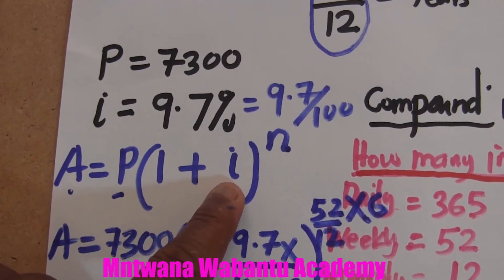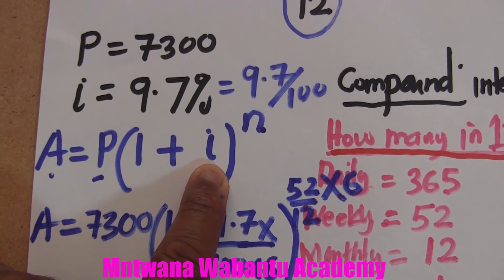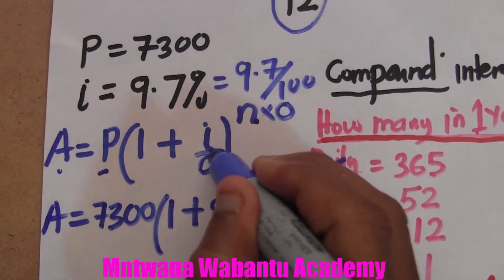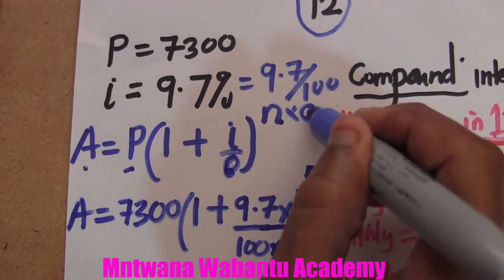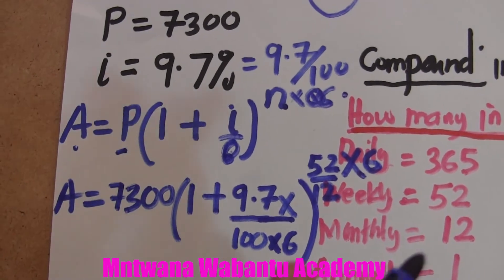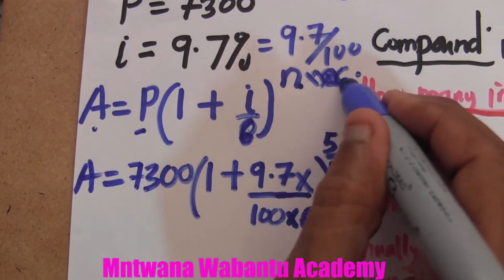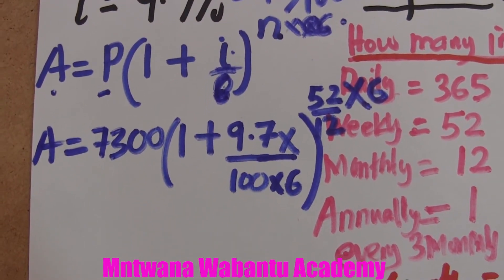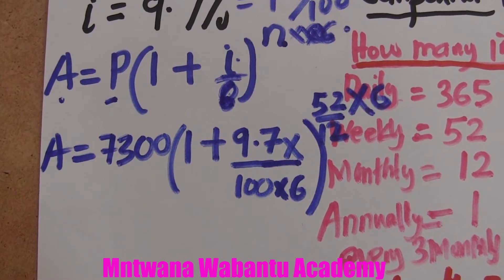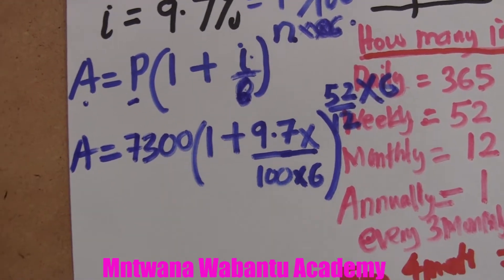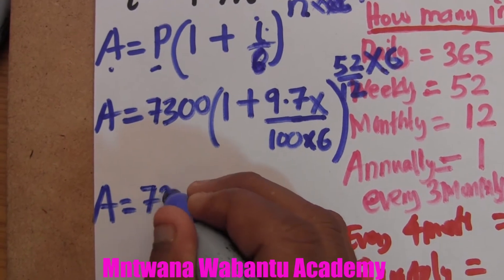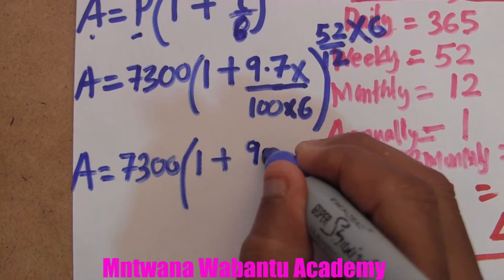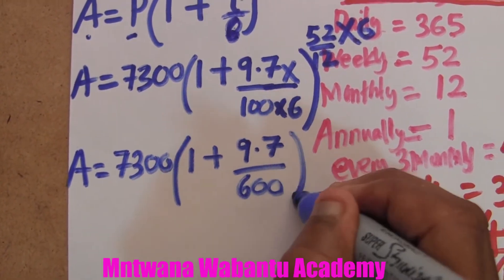The trick is: divide under the interest rate by the compounding frequency, and multiply the time by the same number. Divide by 6 under i, and multiply by 6 in the exponent. You can simplify: the time 52/12 multiplied by 6 equals 52/2, which equals 26. So the exponent is 26.